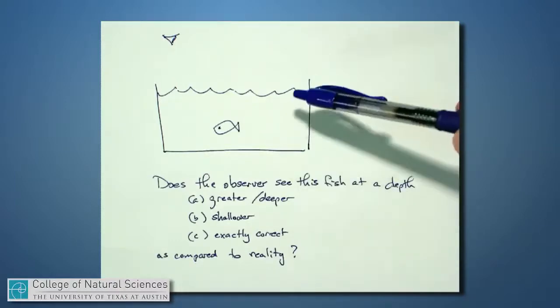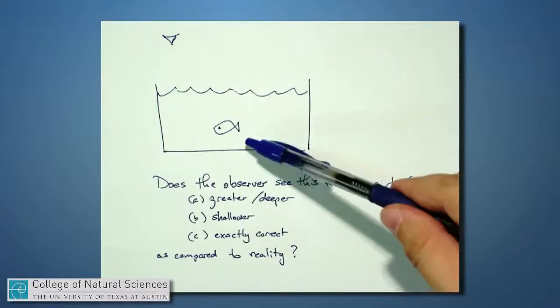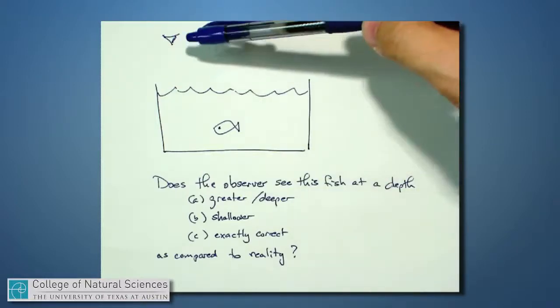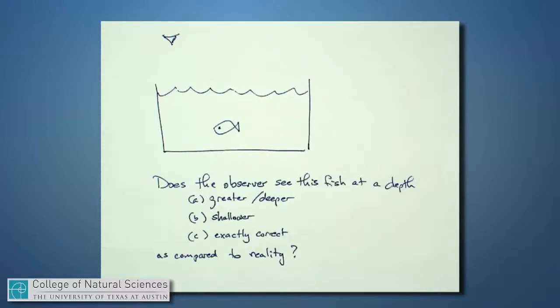If you're looking down into a fish tank and there's a little fishy down here, I want to know: does the observer who's sitting out this way see the fish at exactly the correct depth?